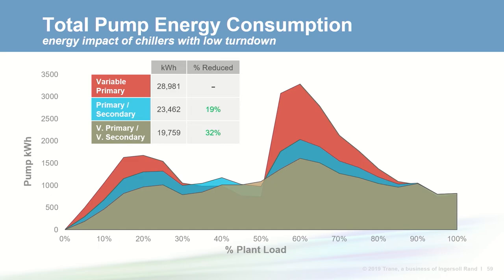This comparison assumes chillers have very limited turndown, which penalizes the variable primary flow system. If designed properly, a variable primary flow system can be very efficient. The takeaway is: you have flexibility to design efficient systems. If a chiller has a high minimum flow and cannot be modified to support a VPF system, choose a different pumping configuration. Alternatively, if you want a variable primary flow system, push the manufacturer to supply a chiller that meets your system requirements.